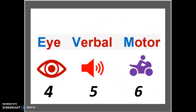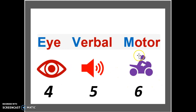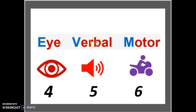The scale is able to measure how severe a coma or state of unconsciousness is. The assessment is composed of 3 different parts. The first is a visual or eye assessment, the second is a verbal assessment, and the third is a motor skill assessment. The eye test will be recorded out of 4, and the verbal and motor will be out of 5 and out of 6.